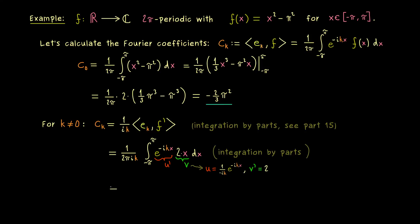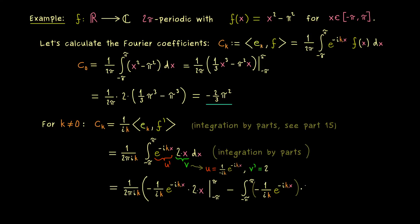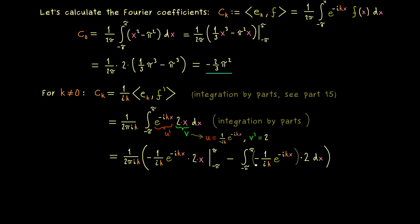Putting everything together for integration by parts: first we have u times v evaluated at the limits, so we multiply both functions and put in π and -π. Then we subtract the integral of u times v'. This integral is just the integral of the exponential function from -π to π, and we already know that value has to be zero, because the antiderivative is the 2π-periodic exponential function.